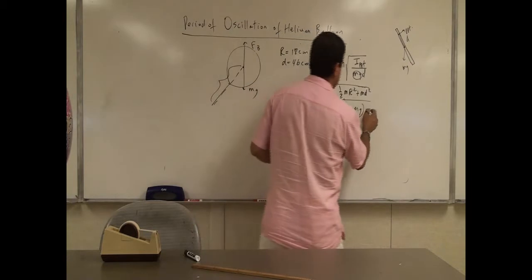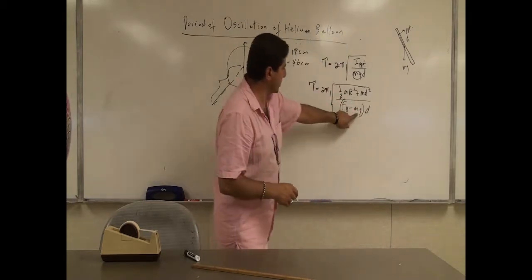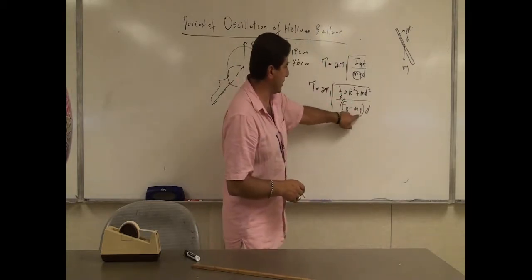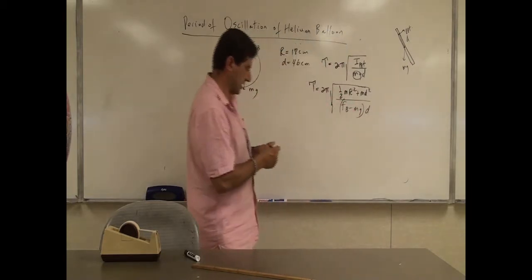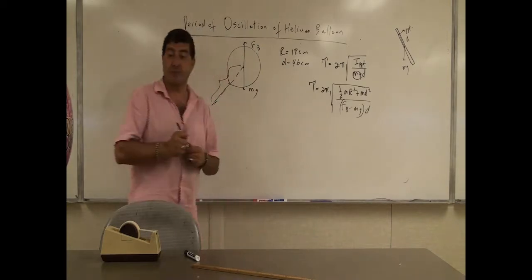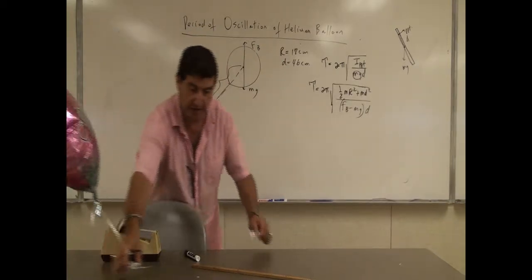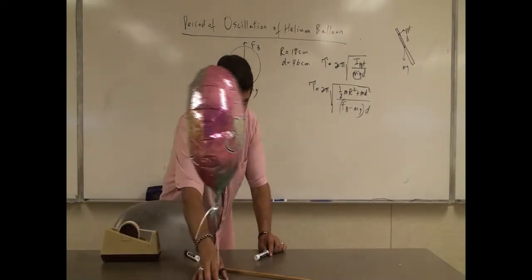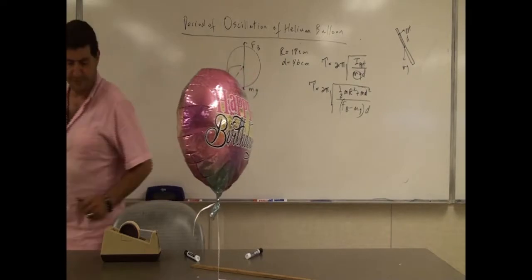So the torque is going to be Fb minus mg. Instead of just mg, you have Fb minus mg, and the distance d is the same distance — the same as the shift amount in the moment of inertia — which is what causes the torque on the system. This is the part of the equation we have to develop a little more.